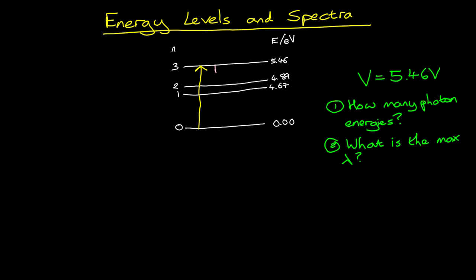Well, it could go from 5.46 straight the way back down to the ground state. It could go from 5.46 to 4.89, from 4.89 to 4.67, and then from 4.67 back to the ground state. Or it could go from 5.46 to 4.67, and then from 4.67 down to ground. Or from 5.46 to 4.89, and then 4.89 all the way down to the ground state. So this gives us 1, 2, 3, 4, 5, 6 possible photon energies that can be emitted.